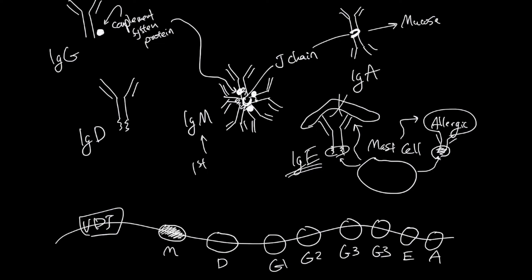IgM is the closest exon to the VDJ region and it's also the first antibody to be made by default. IgD is often secreted together with IgM, maybe because IgM and IgD are closer in distance.